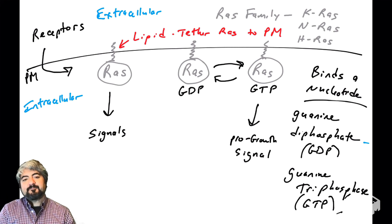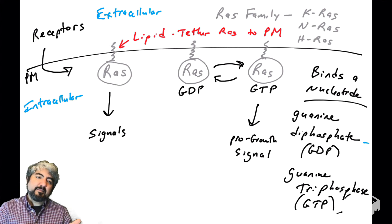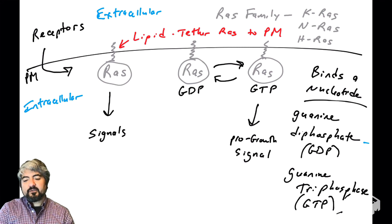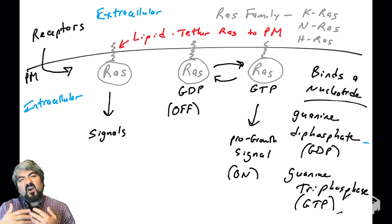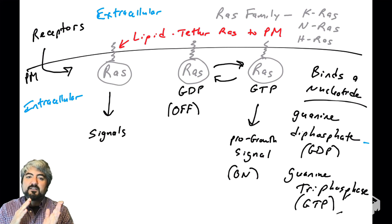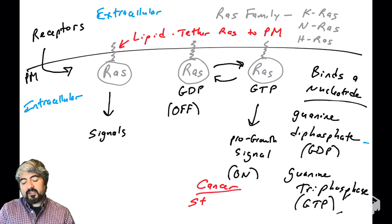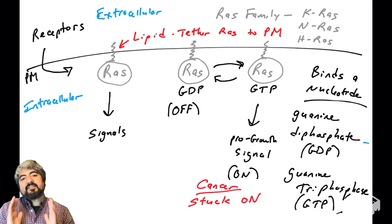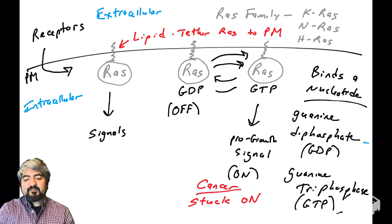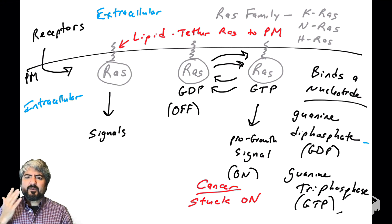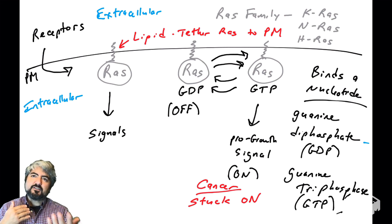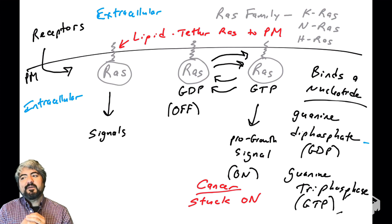The GDP-bound version is the off version of RAS. You can think of RAS as a switch—on and off. It's very binary: it's either bound to GTP and stimulating growth, or bound to GDP and not stimulating growth. The important thing to know is that in many human cancer cells, RAS is stuck in this on or pro-growth position—stuck with GTP. To understand why it gets stuck with GTP, we really have to go into detail about how RAS is regulated and how it switches back and forth.